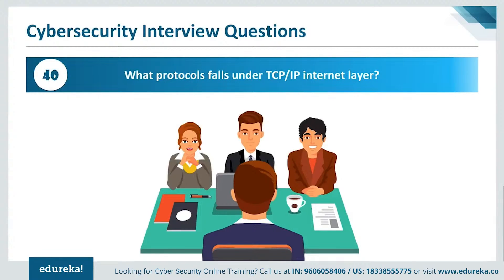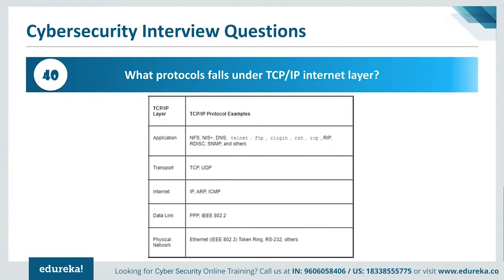Question 40: what protocols fall under the TCP/IP internet layer? Going through the five layers — starting with the physical layer, which includes Ethernet, IEEE 802.3, and RS-232. Moving to the data link layer, we have the PPP protocol and IEEE 802.2. Then the network layer is governed by the IP protocol, the ARP protocol — address resolution protocol — and the ICMP protocol.